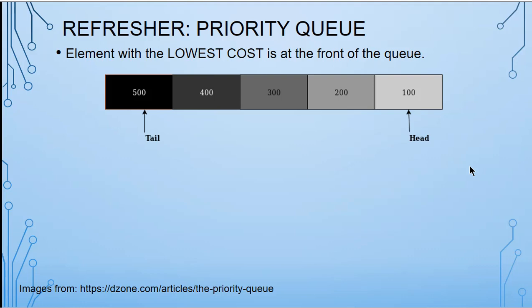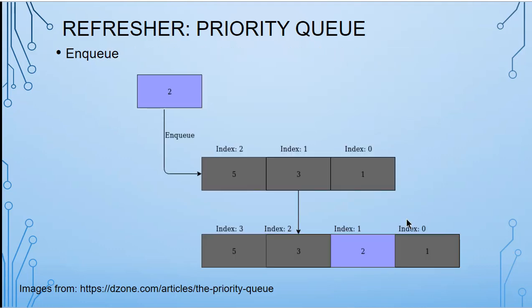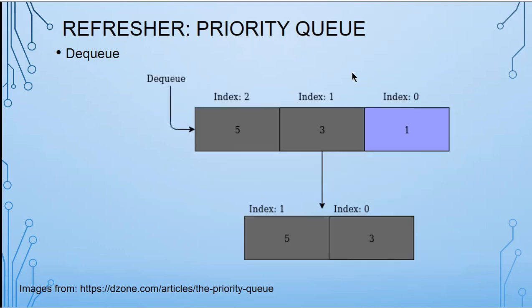The way a priority queue works is that you have a head and a tail. The element with the lowest cost is always at the front of the queue. So 100 is lower than 500, so it goes on the right here. For the enqueue function: if I have a queue with 5, 3, 1 in it and I want to add an element with priority 2, it doesn't just go to the back — it gets inserted in the appropriate place. And dequeue always takes what's at the front.